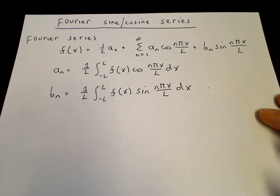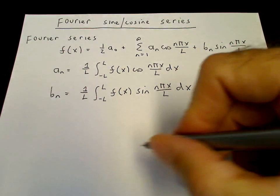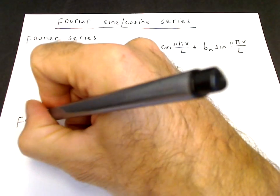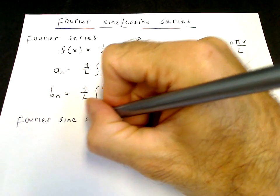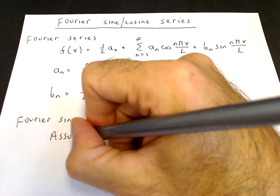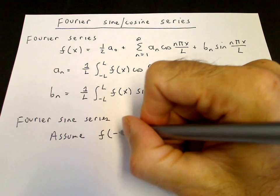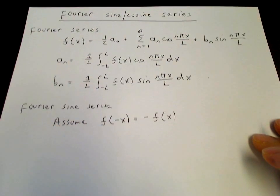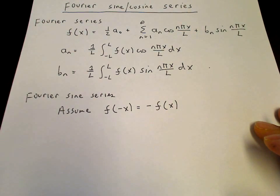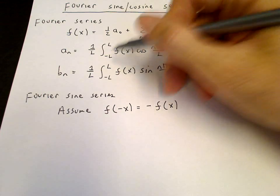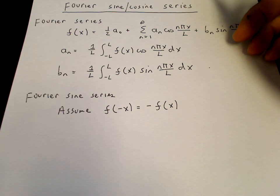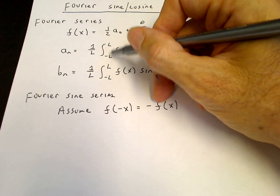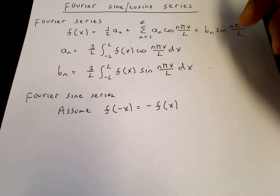The Fourier sine series comes from assuming that f(x) is odd, meaning f(-x) equals -f(x). If that's the case, then these coefficients simplify. The integral over a symmetric interval of an odd function is 0, and the integral over a symmetric interval of an even function is twice the integral from 0 to l.